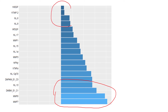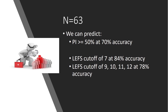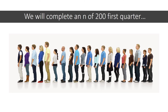Right now, with just 63 patients, the model is good enough to attain 84% accuracy in picking out the best patients based on the synovial fluid sample itself. We're going to complete sample collection on 200 patients within the next week, and within the next six months we'll have enough data to run a much bigger model.